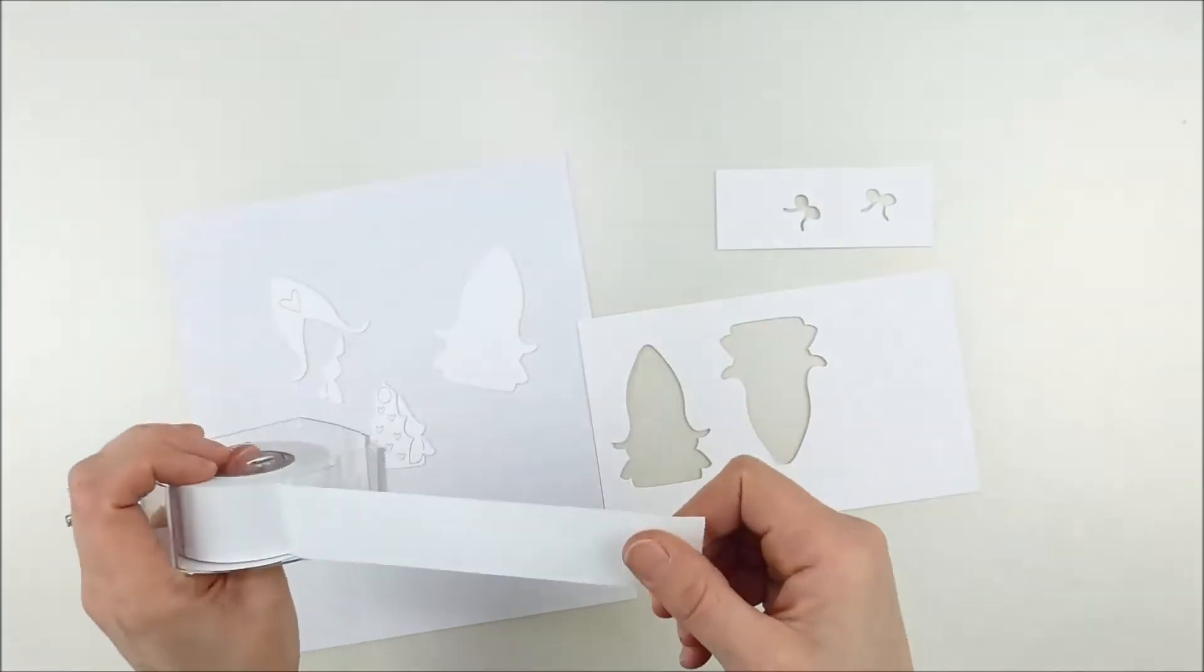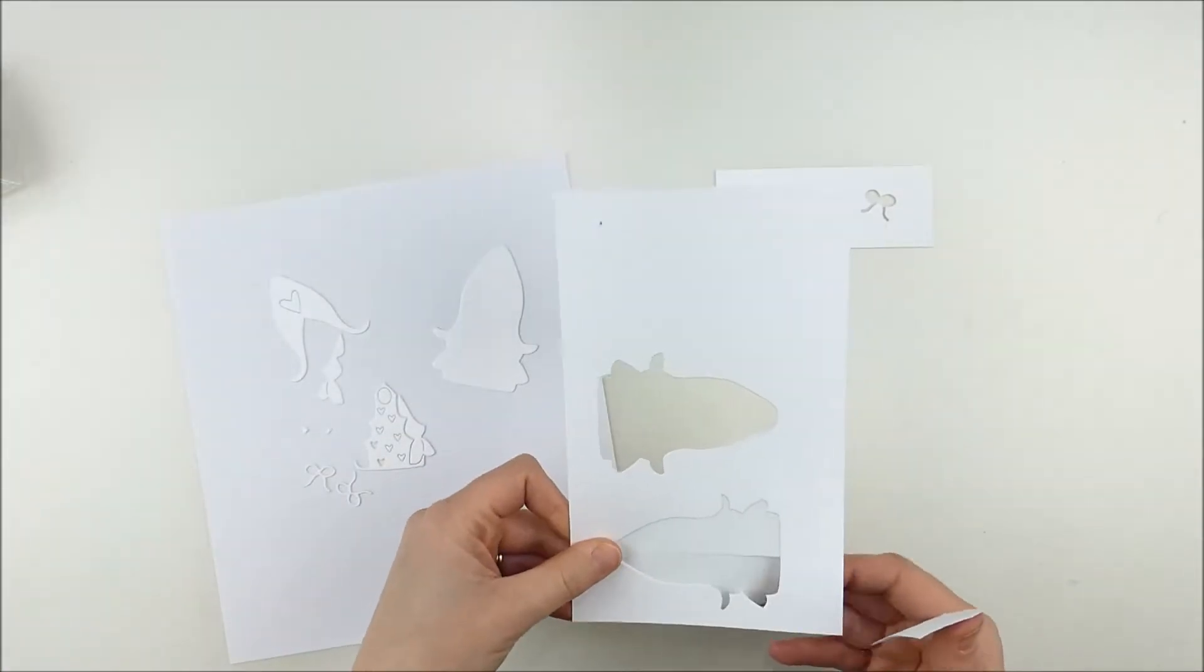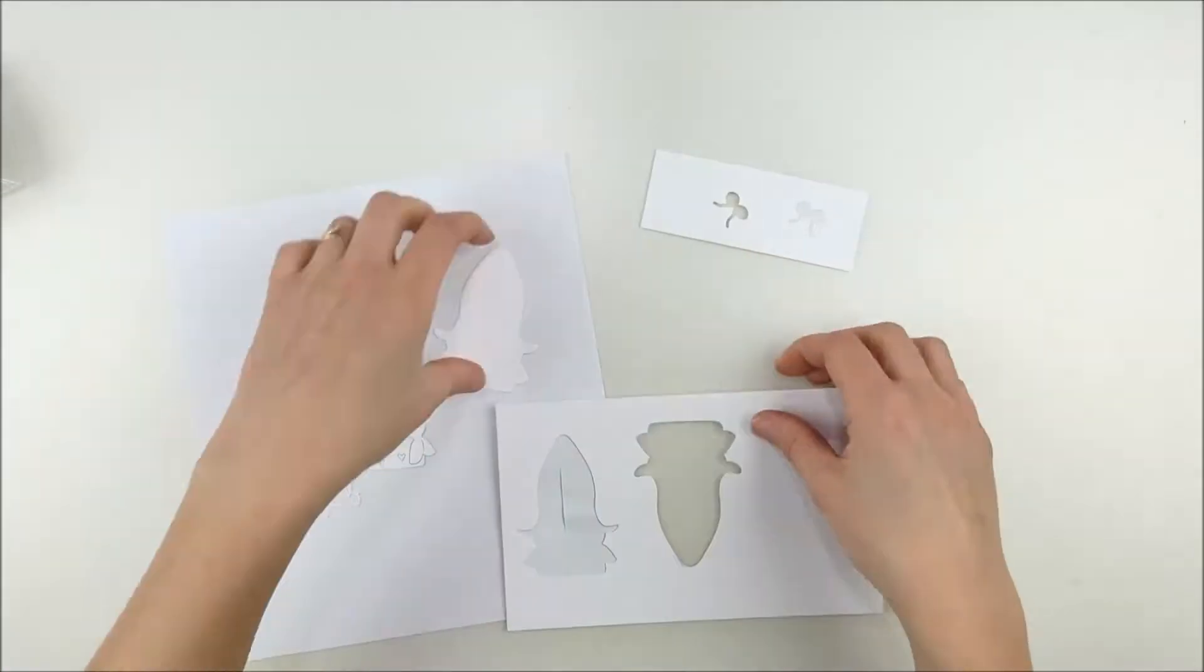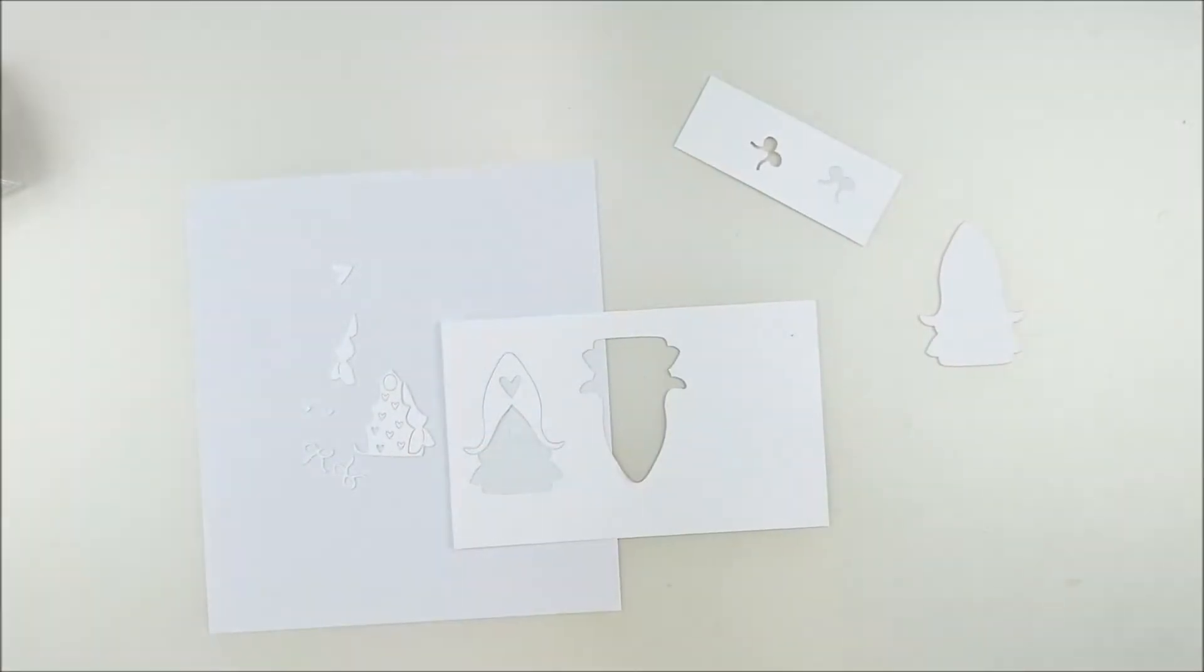I've already die-cut all of the pieces. Instead of cutting them from different colors of cardstock, I like to cut everything from white cardstock and color it in. For today I'm going to use Copic markers.